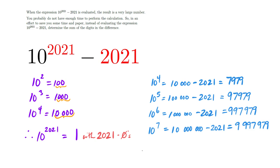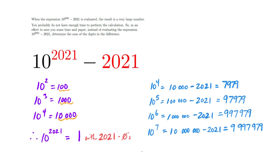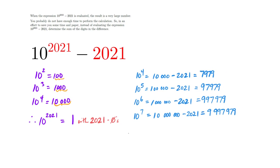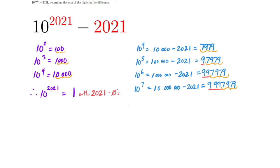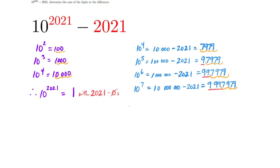I am starting to see a pattern. Every one of my answers finishes with 7,979. And I can see what's building out in front: one 9, then two nines, then three nines, and so on. I think I have a pattern — I can predict my number of nines out in front of this 7,979 that seems to end every answer.